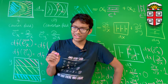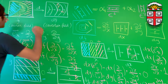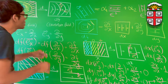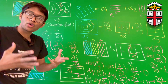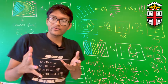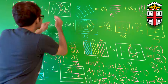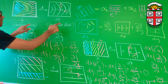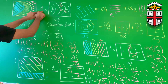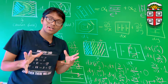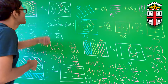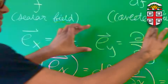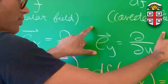Before we dive into the math, let me show you what we're going to do. We're starting with some scalar field f, and then we're going to apply the differential operator d to get a co-vector field df. The basis vectors e_x and e_y can be expressed as partial derivatives: ∂/∂x and ∂/∂y.